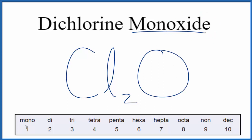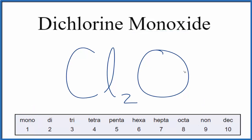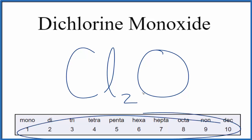Then 'monoxide' — oxide comes from oxygen — so let's write our O. 'Mono' means one, so we could put a 1 here, but by convention we don't write the 1; we just assume it's there. If you were given the formula and asked to write the name for dichlorine monoxide, you'd know you have chlorine and oxygen, which are both nonmetals, so you need to use these prefixes to show how many atoms you have of each element.